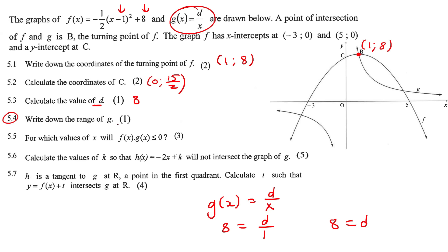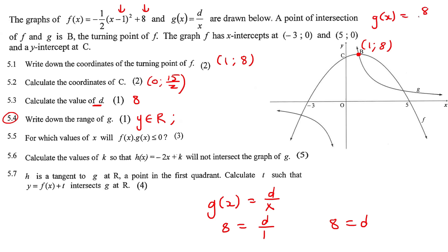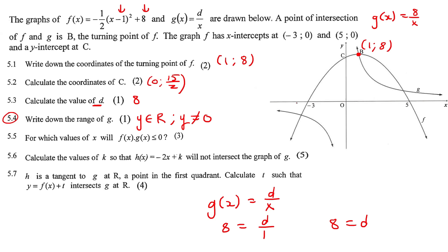Write down the range of g. G is the hyperbola. For a hyperbola, the range is all y-values except at the asymptotes. From g's equation, which is 8/x, nothing has been added or subtracted, so the graph hasn't been moved up or down. The asymptote is the x-axis, so y must not equal 0. That is the range.